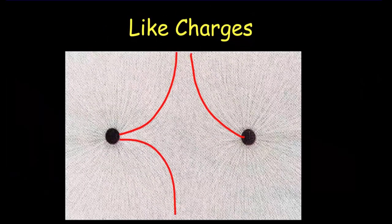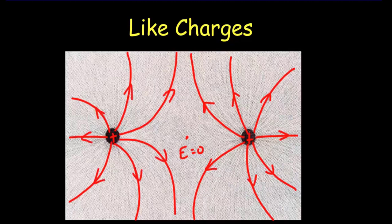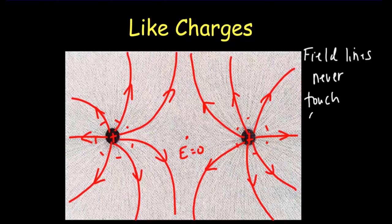If we have two like charges, we get a repulsive pattern. In the repulsive pattern, you don't see any field lines right in the center — there would be zero electric field right in the center of that pattern. With two positive charges, arrows always go away from the charges, and we see the strongest field in close. Notice that the field lines never touch each other. If the field lines were to touch, the line density would be infinite, which would mean your electric field is infinite. So the field lines can never touch each other.